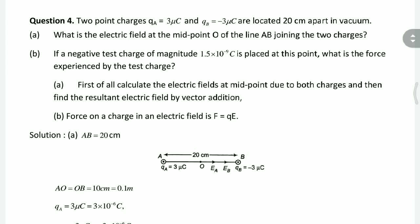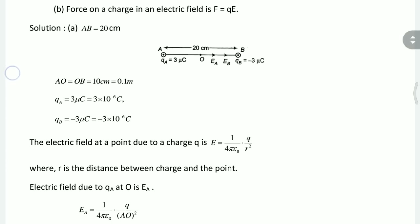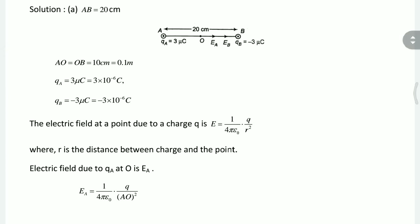Question number four: two point charges QA equals 3 microcoulomb and QB equals minus 3 microcoulomb are located 20 cm apart in vacuum. You must be able to answer both parts of this question. Make sure you do not lose marks — you should be able to clearly explain your working.